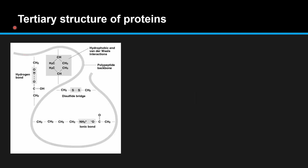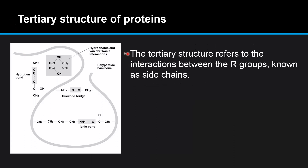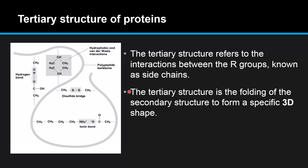Next we have the tertiary structure of proteins. The tertiary structure refers to the interactions between the R groups, which are known as side chains. The tertiary structure is the folding of the secondary structure to form a specific 3D shape. Here are some of the interactions that form the tertiary structure.